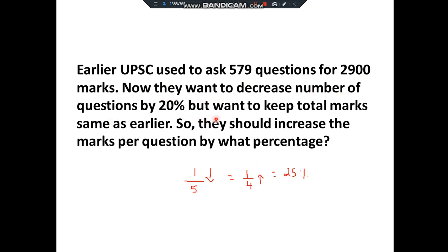UPSC used to ask 579 questions for 2900 marks. They want to decrease the number of questions by 20% but keep the total marks the same — so marks per question should increase by what percentage? The extra 579/2900 figure is given to confuse; focus on the concept. 20% = 1/5 decrease. Keep numerator 1; 5−1=4. So 1/4 = 25% increase in marks per question.